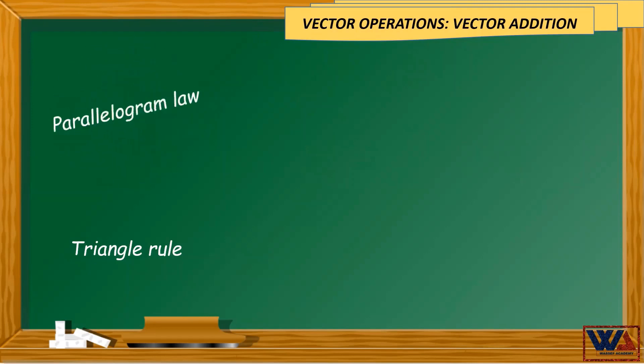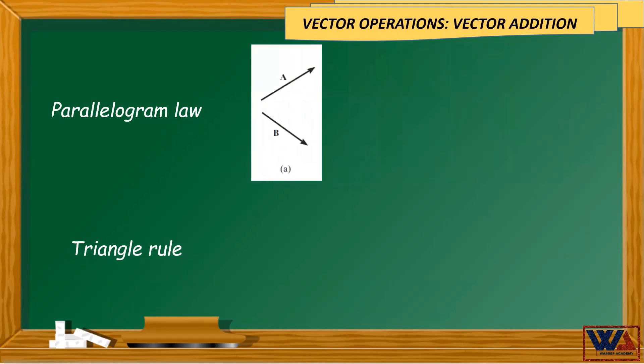Let's start with the parallelogram method. If we need to add the two vectors A and B using the parallelogram method, we can follow the following steps. First, connect the two vectors A and B from their starting points, or tails, as shown in figure A.